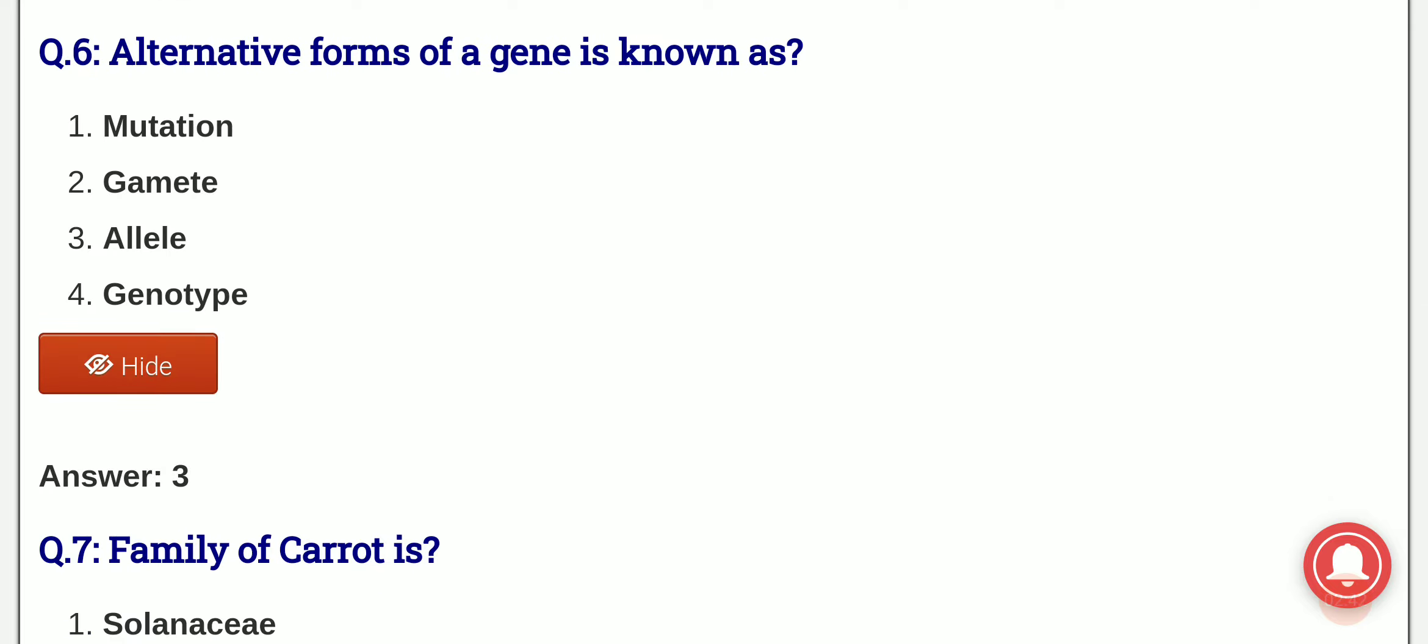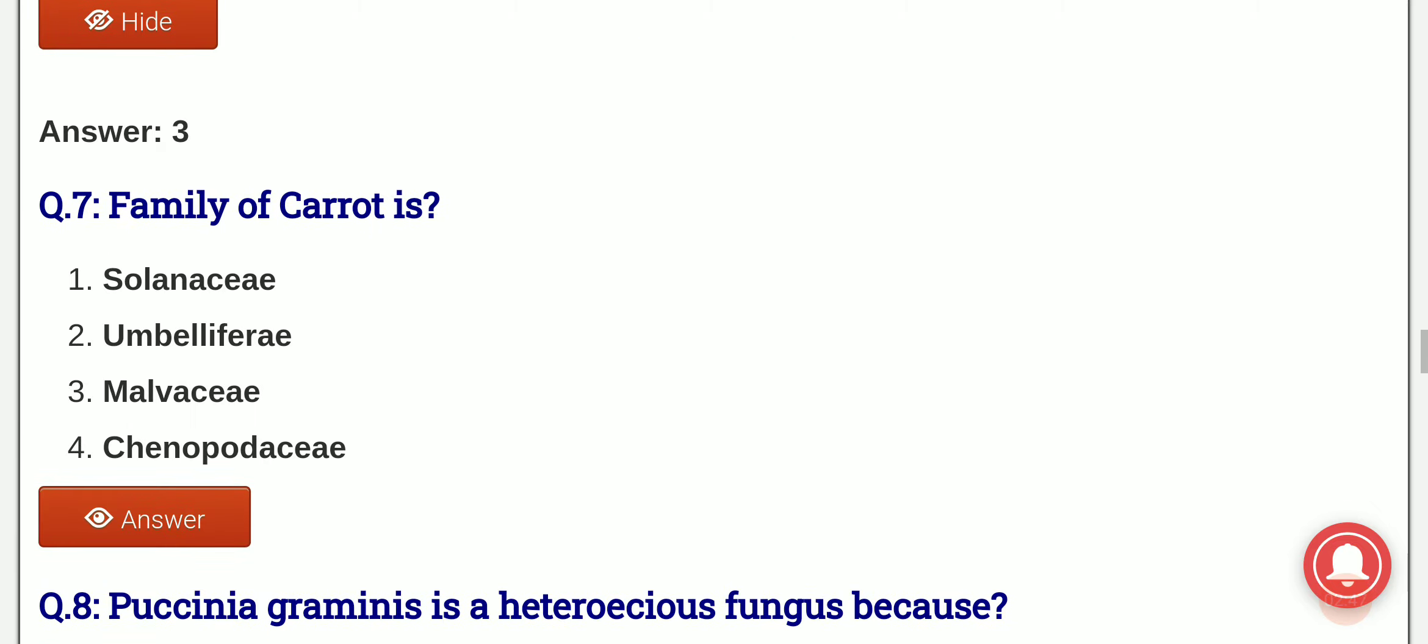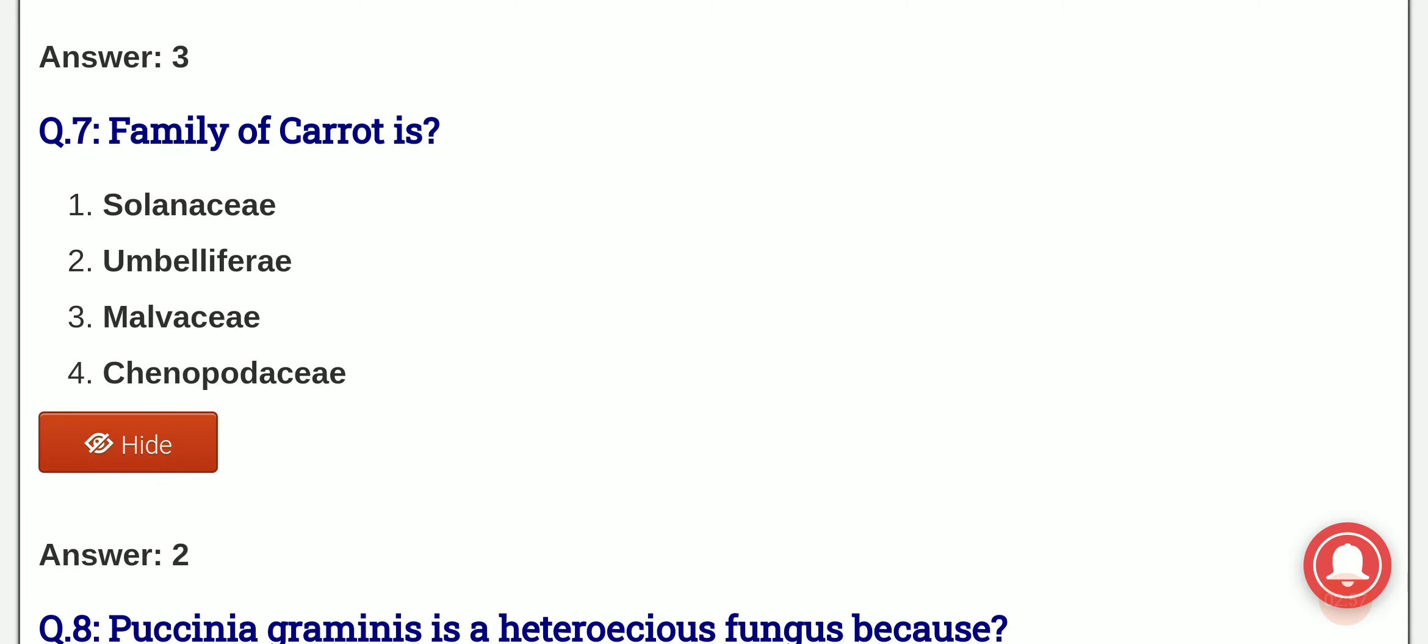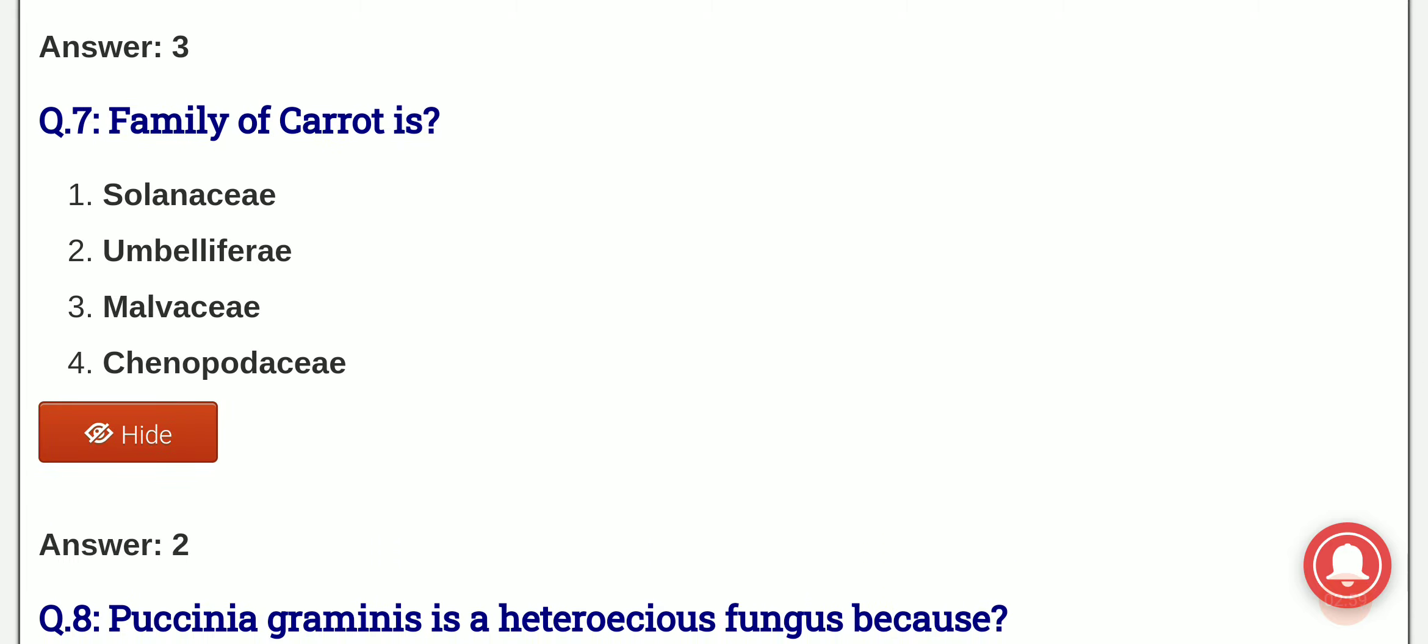Family of carrot: the options are Solanaceae and Umbelliferae. And the answer is option 2, that is Umbelliferae. Carrot belongs to the family Umbelliferae.